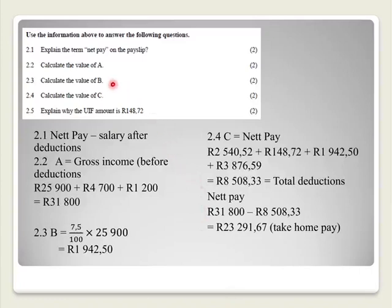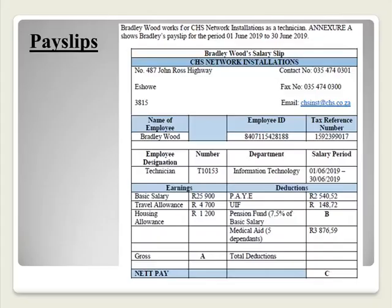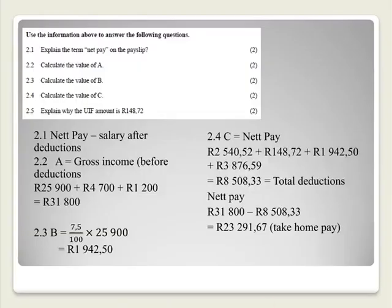Then number 2.2 asks us to calculate the value of A. The value of A is his gross income — all of this here is his income — so you will add everything together to get A. Then B is also a missing value — that's the pension fund — and they are very kind, they say 7.5% of the basic salary. So the calculation is 7.5% of R25,900, which gives us R1,942.50.